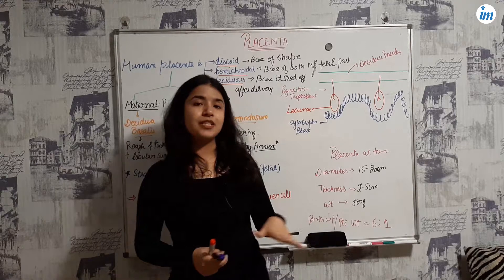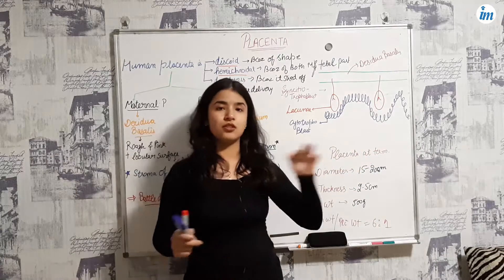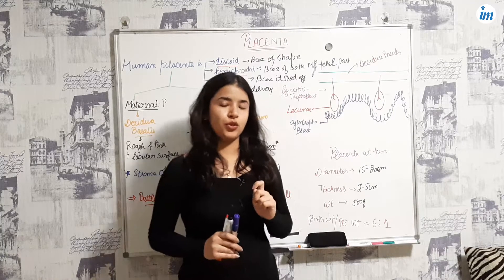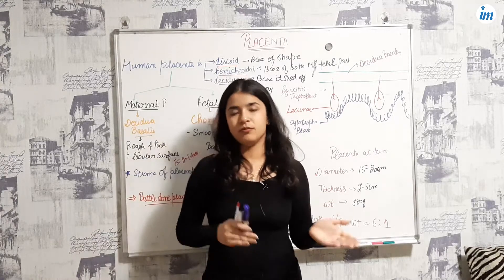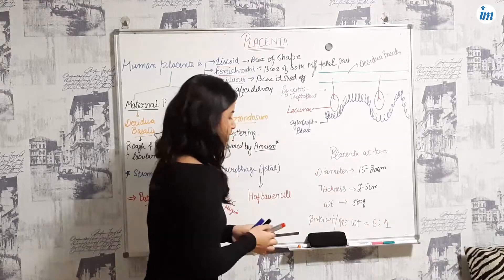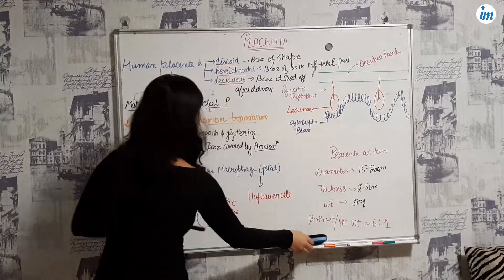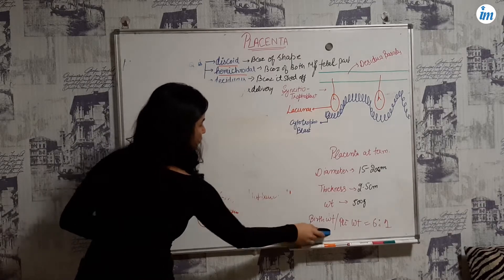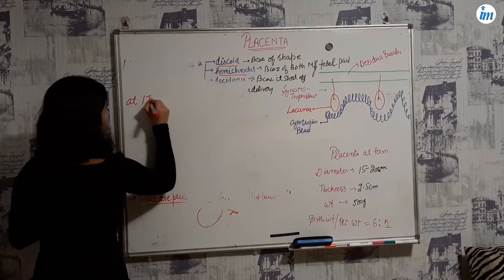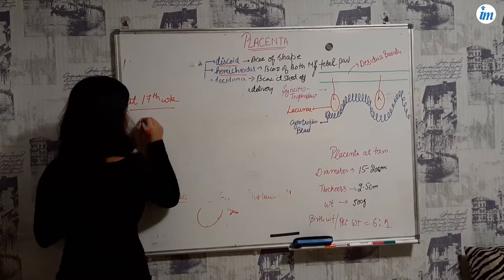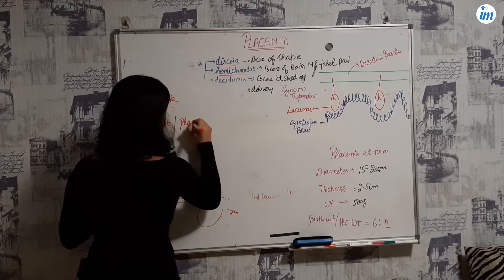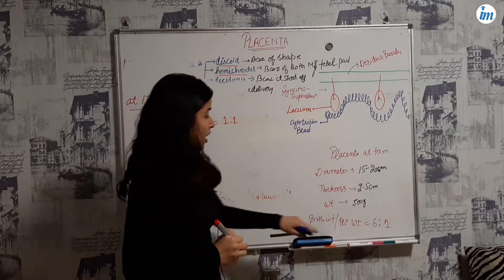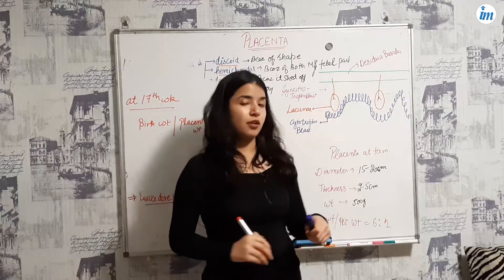The birth weight to placental weight ratio at birth is 6:1. However, at the 17th week, the birth weight to placental weight ratio is 1:1. So at 17 weeks, the fetus and placenta are roughly equal in weight.